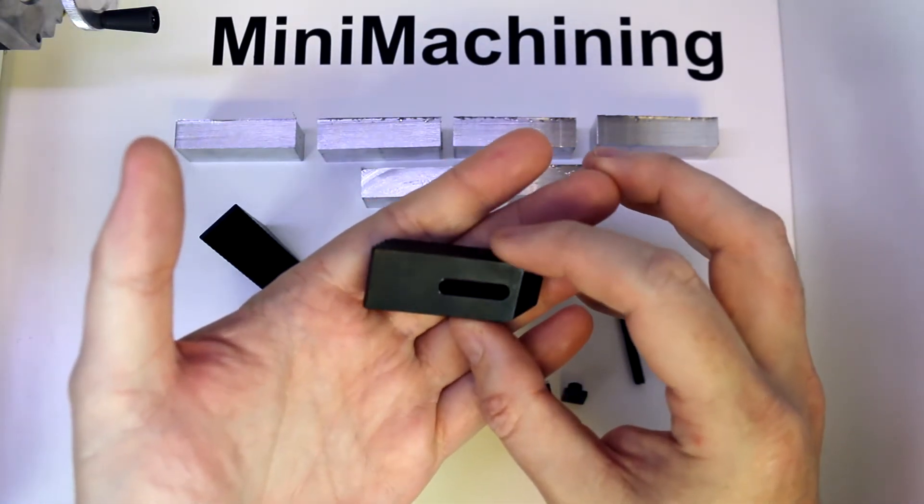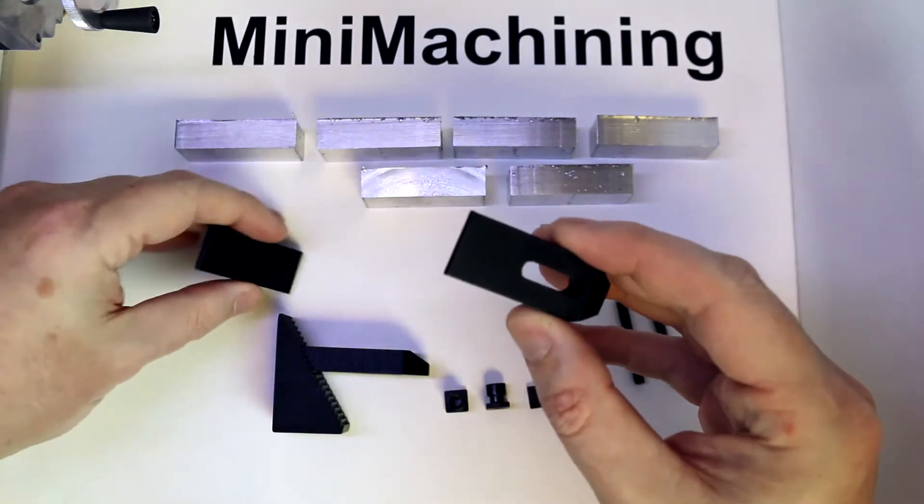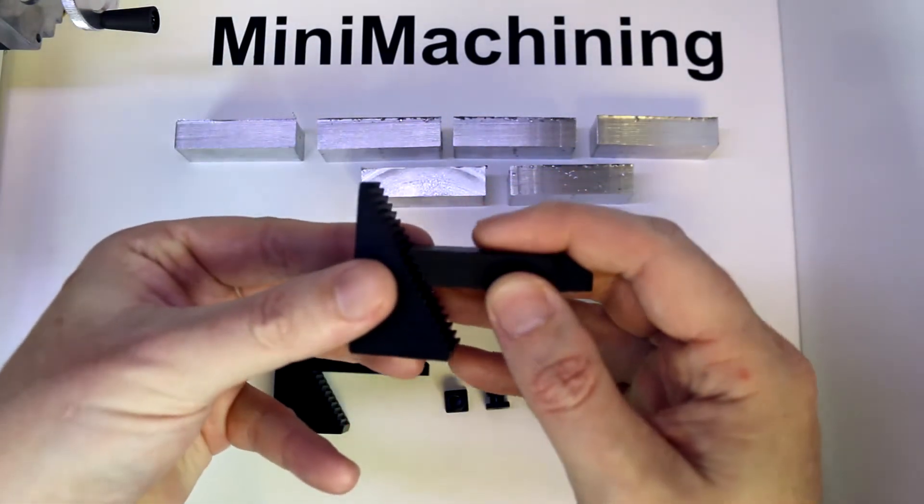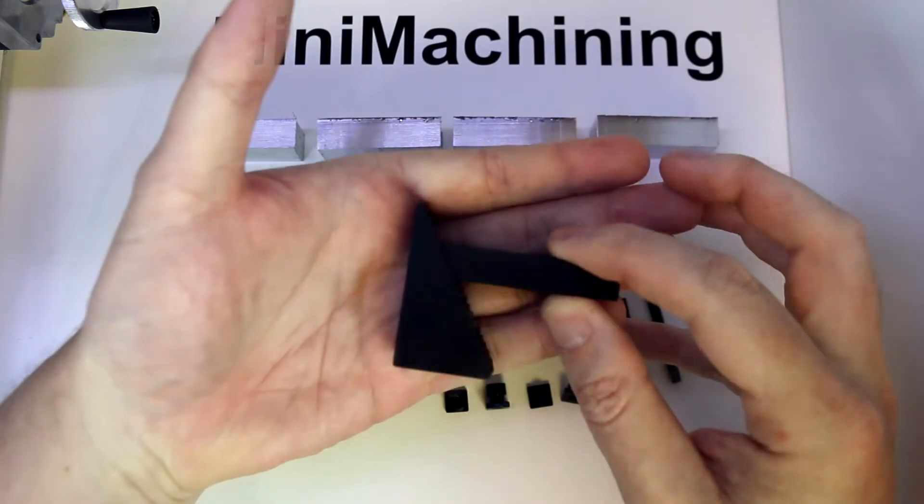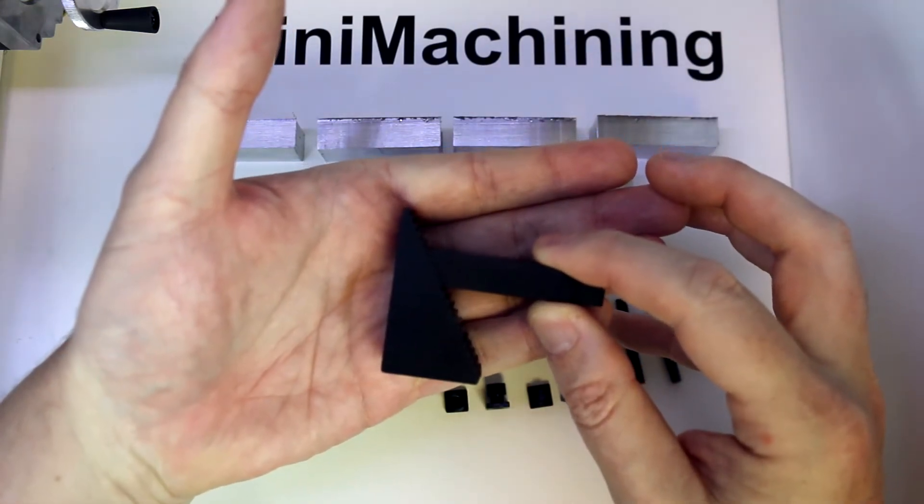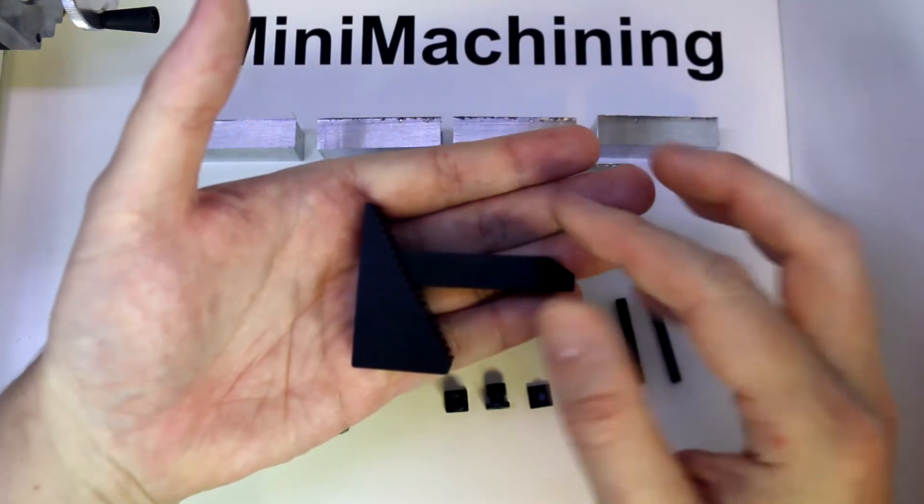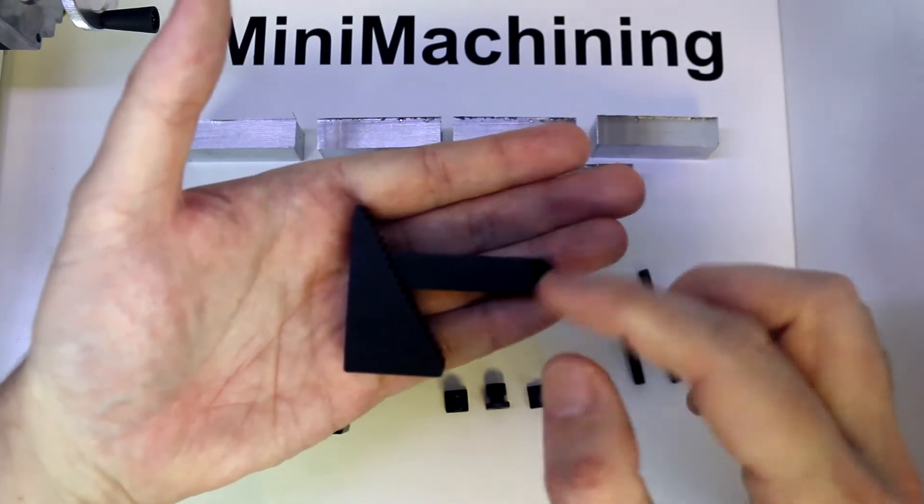I believe this is one of their deluxe models. It's a step clamp, so it engages here with angled teeth that allow you to adjust the height of it, and then you'd use a threaded rod and a T-nut to hold it to the table.